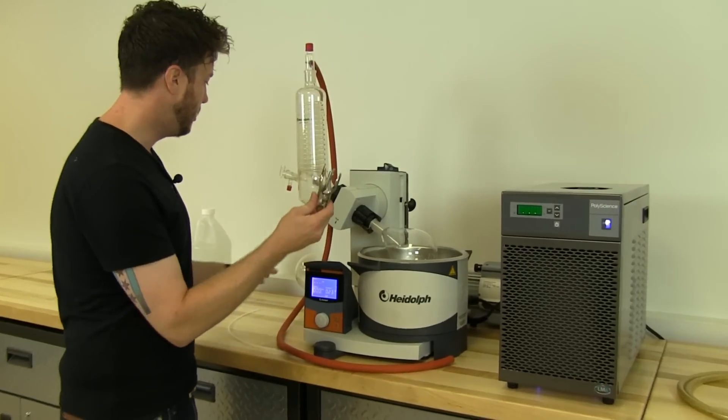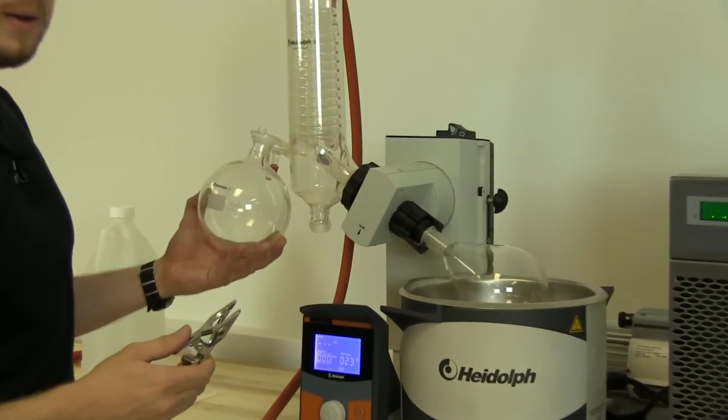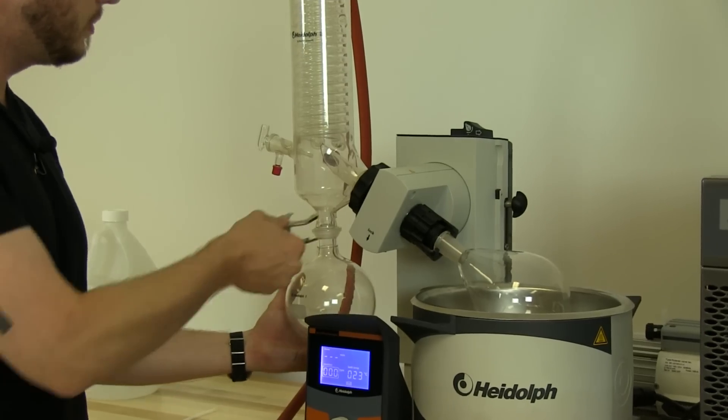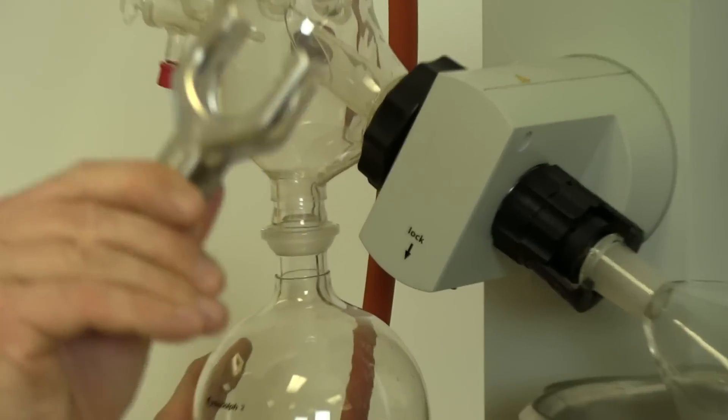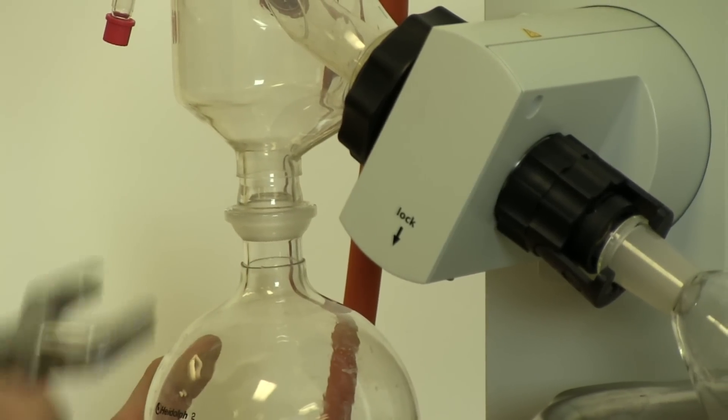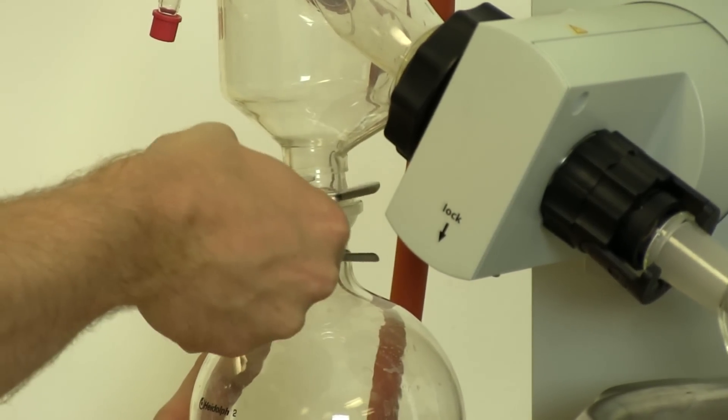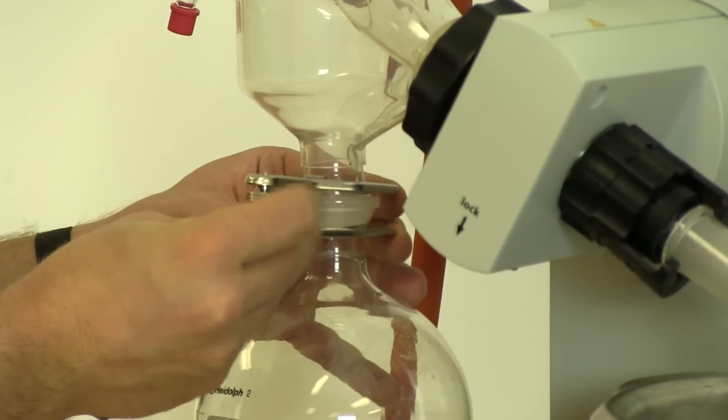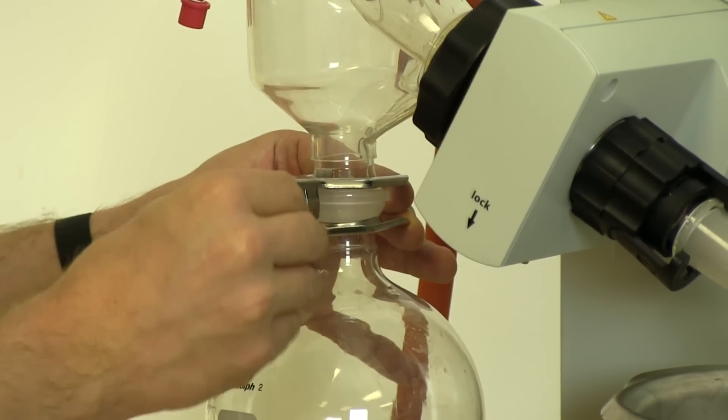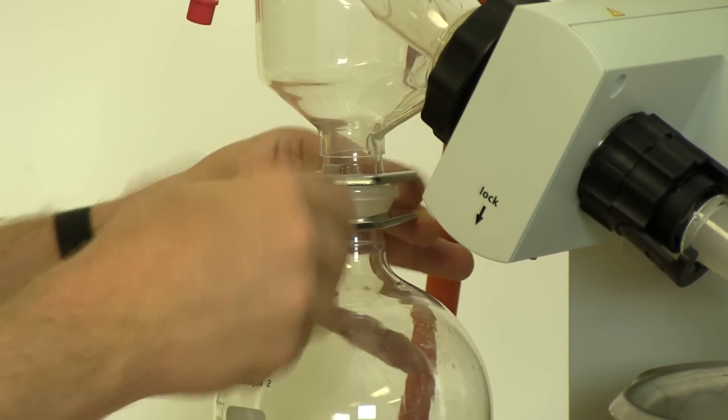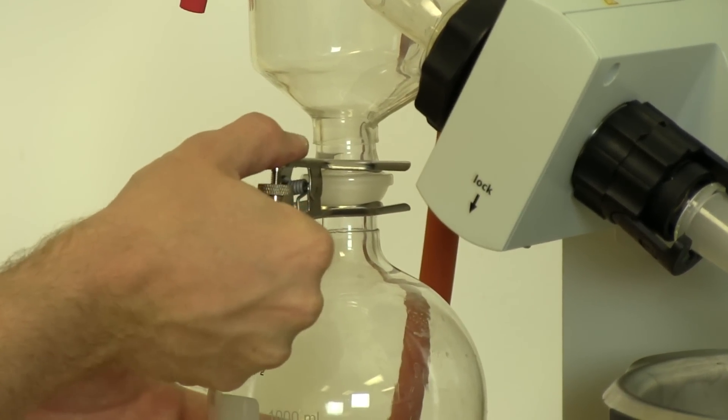Now we have the clamp here for connecting the receiving flask. It attaches on here. There's two sizes you can see. And we lock it in place by spinning this down and now that clamp can't go anywhere.